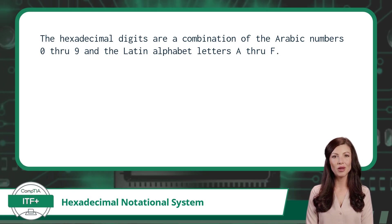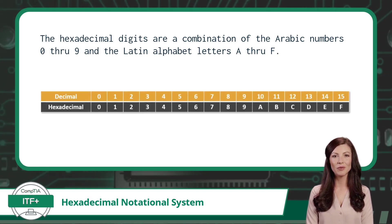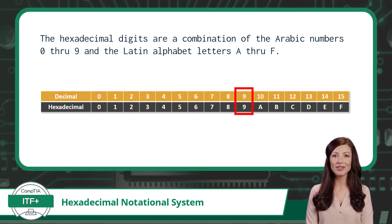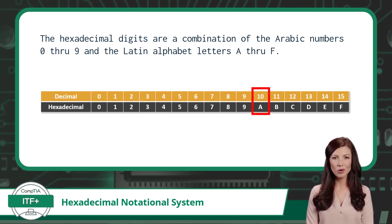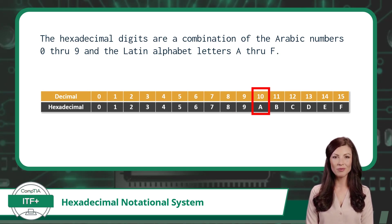This can be a bit confusing, so here is a side-by-side comparison with the more commonly understood decimal system. The decimal numbers remain consistent with the hexadecimal system up to the value of 9. Once a value of 10 is reached, the decimal system requires an additional place value to express 10, while the hexadecimal system continues on to A.